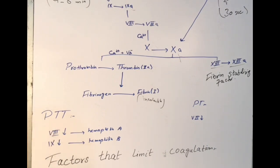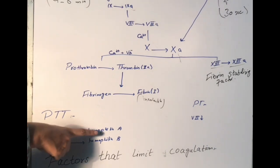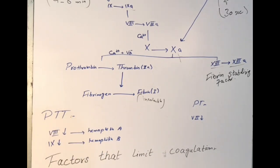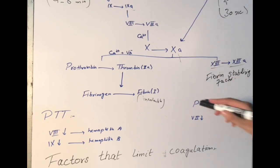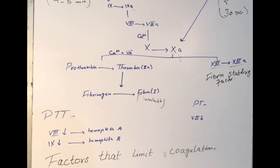Factor 8 deficiency leads to hemophilia A and factor 9 deficiency leads to hemophilia B. Prothrombin time (PT) is the test used to assess the function of proteins involved in the extrinsic pathway. The proteins involved in the extrinsic pathway are factors 3, 7, 10, 5, 2, and 1. If there is a deficiency of factor 7, there will be a prolonged prothrombin time. If there is a deficiency of factor 8 or factor 9, there will be an increased partial thromboplastin time.